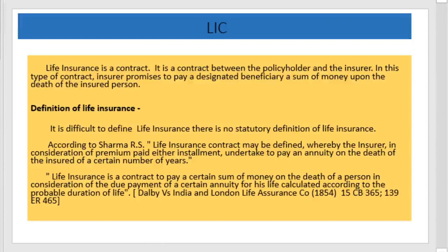What is life insurance? Life insurance is a contract between the policyholder and the insurer. In this type of contract, the insurer promises to pay a designated beneficiary a sum of money upon the death of the insured person — that is, it is the insurance of life.